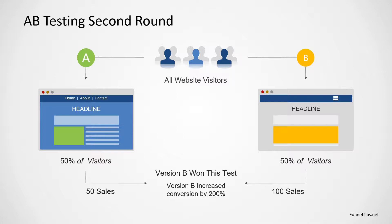A is often called the champion and B is often called the challenger. So now we've got a new challenger and we've run 50% of traffic to both landing page options. After the duration of time or period of traffic we're using to judge the winner, we can see that version B is the winner again. This time it doubled the sales of option A for the same amount of visitor traffic.